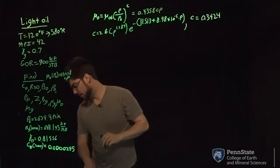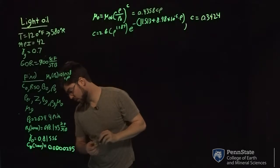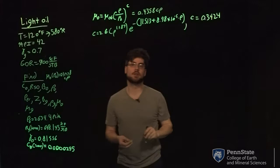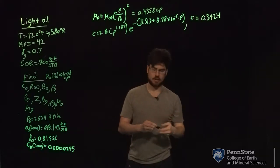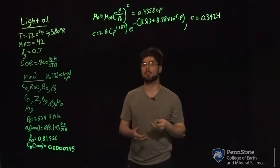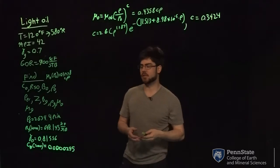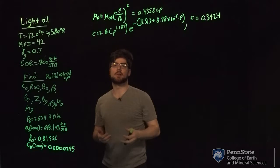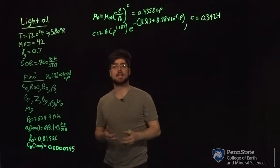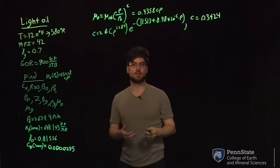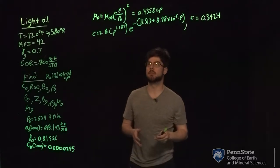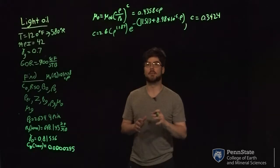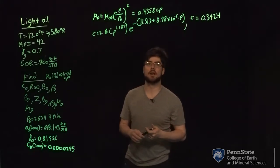Once we find that, we're pretty much done with all the oil properties. Next we can start working on the gas properties. There is no free gas at or above bubble point, so there's no viscosity of gas, no gas formation volume factor, no density of gas — those don't exist above bubble point. So the only pressure of interest for gas properties is going to be at 2,000 psi.